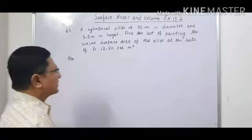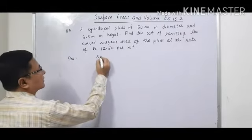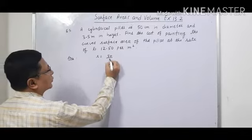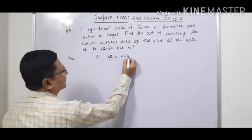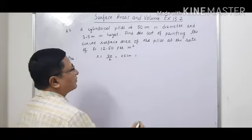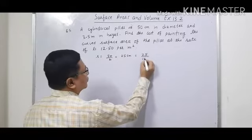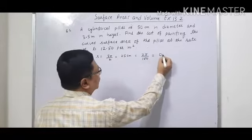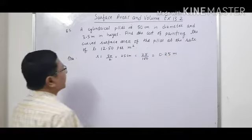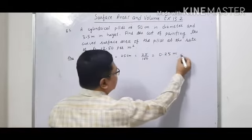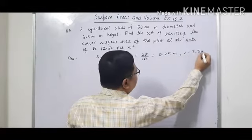So let us see what is given in the question. The diameter is 50 cm, so the radius will become 50 upon 2, that is equal to 25 cm. We will convert in meter by dividing it by 100, so 25 upon 100, that is 0.25 meter. And height is given, that is 3.5 meter.